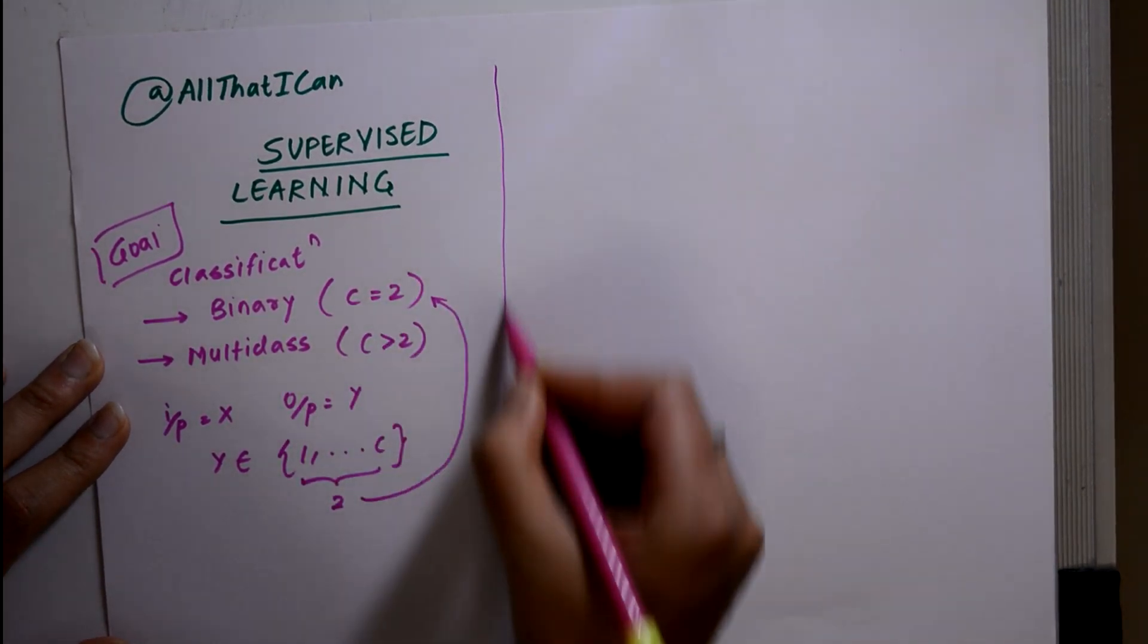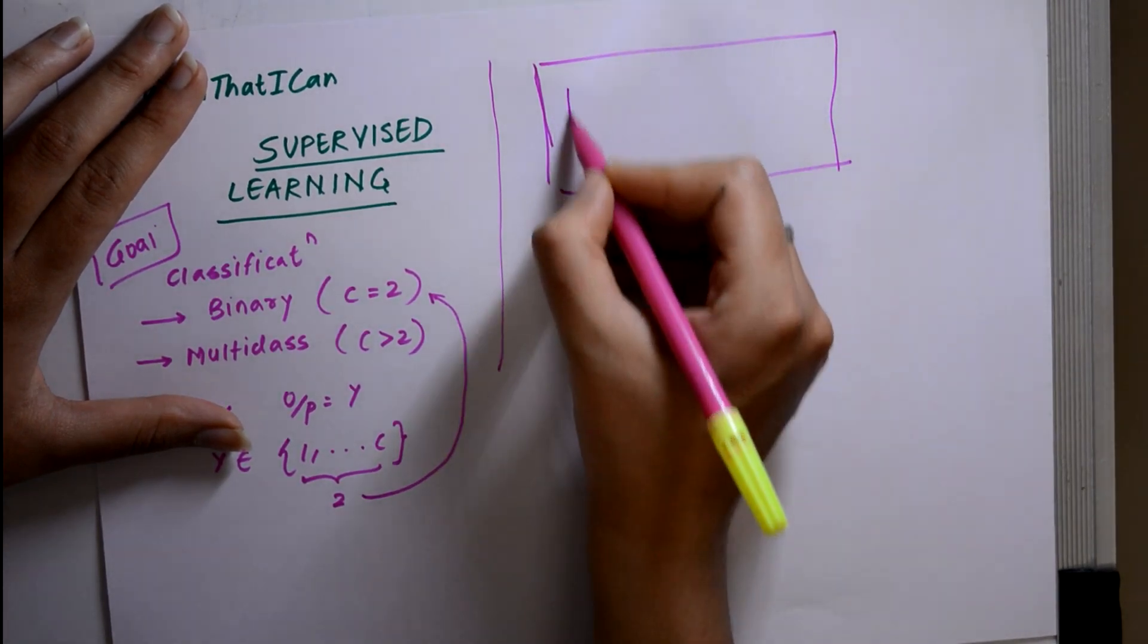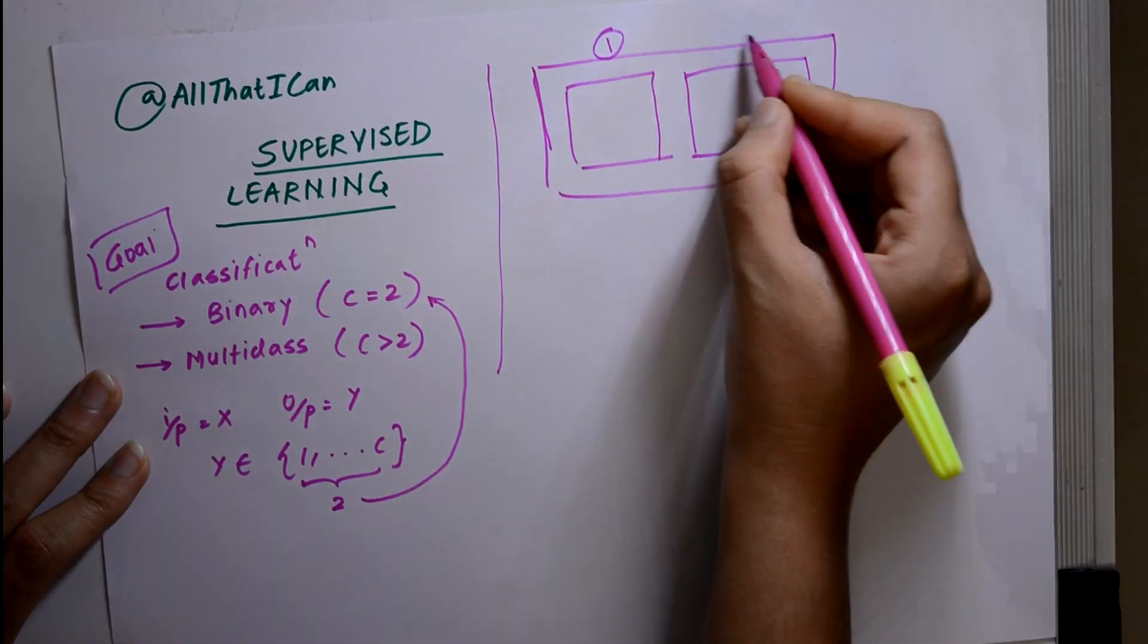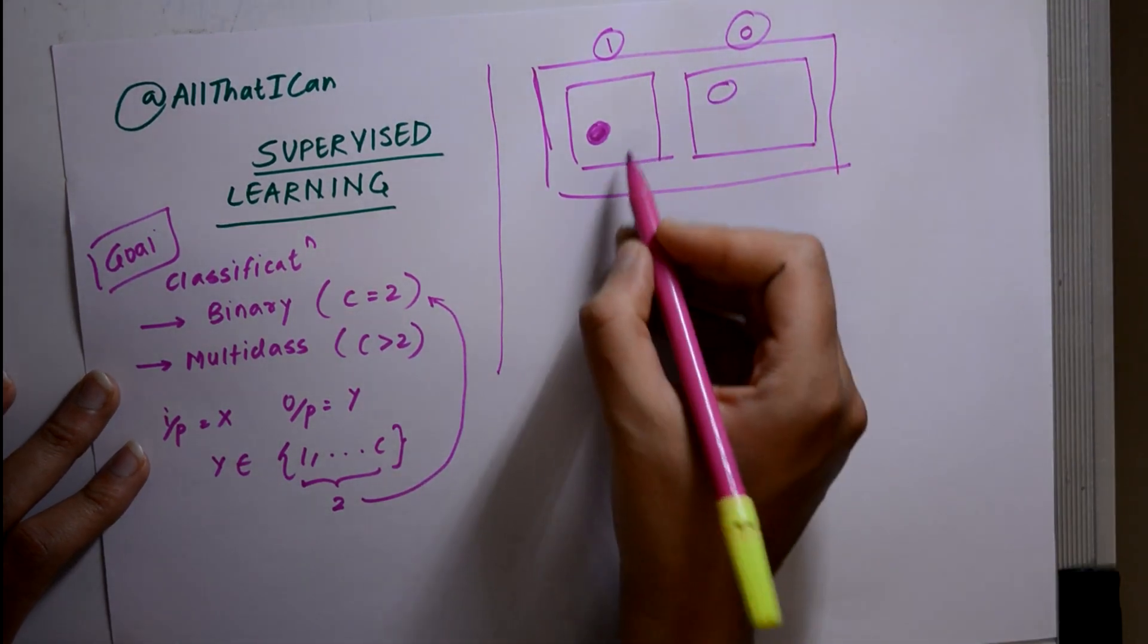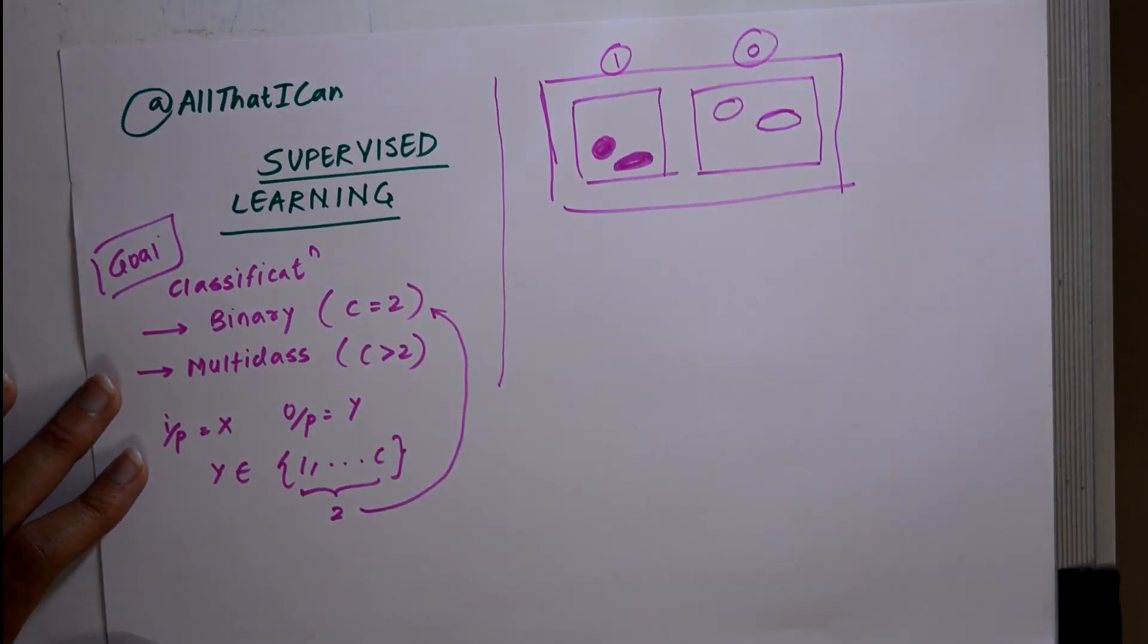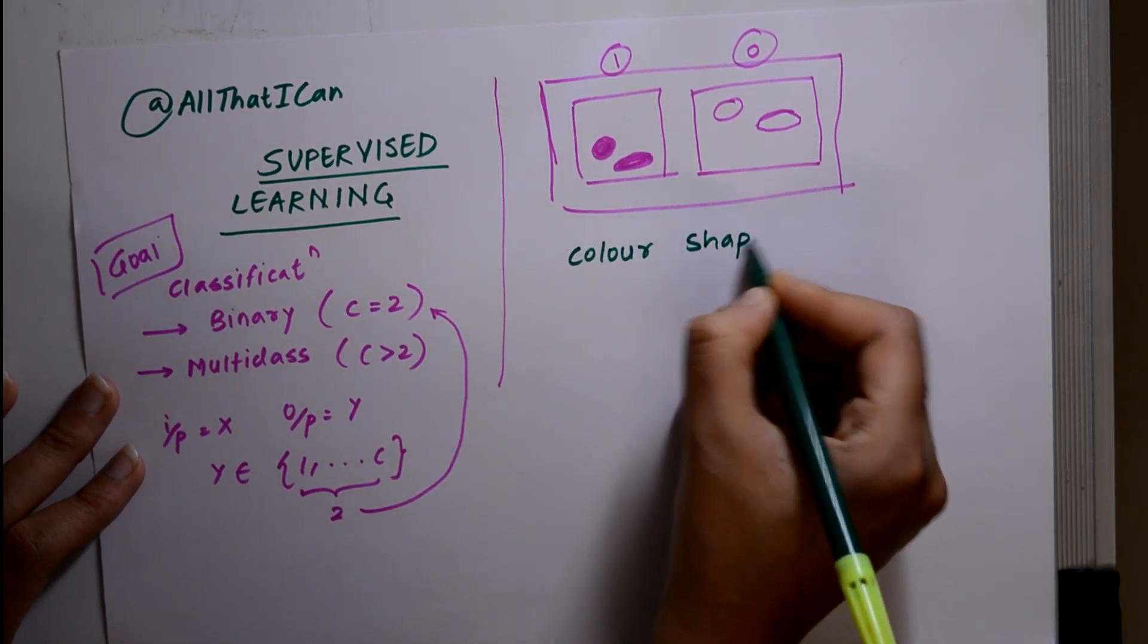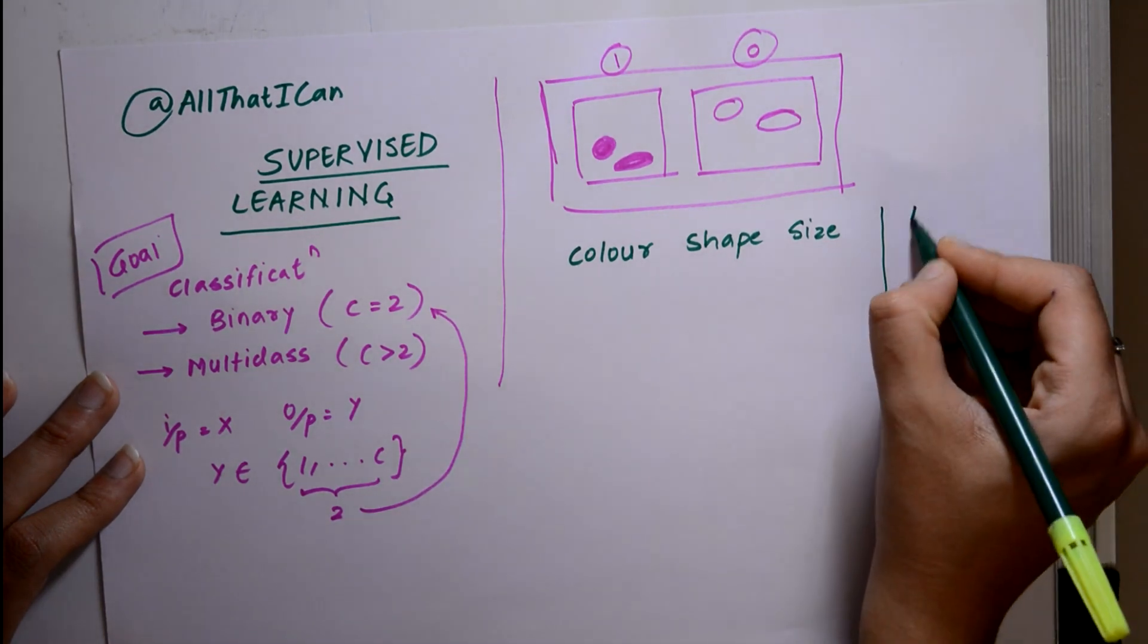Coming to an example of supervised learning, suppose we are having a set of toys. And we want to classify whether it belongs to set 1 or set 0. So how are we going to classify them? We have to first set the features according to which we are going to classify them. What could be the features? It could be color or maybe shape, or we can also take size as one of the features. And then our output, or we can call it as a label.